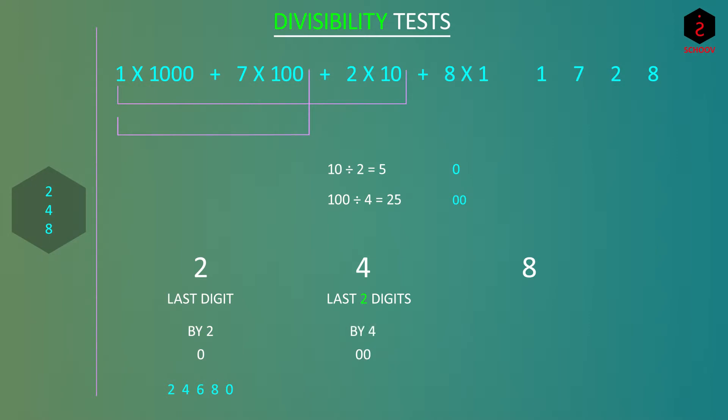8 is similar. Since the first term has 1000, it is completely divisible by 8 because 1000 divided by 8 is 125. We have to check the last three terms and we can check that they are divisible by 8. For 8, we check last three digits. They should be divisible by 8 or should be 000.